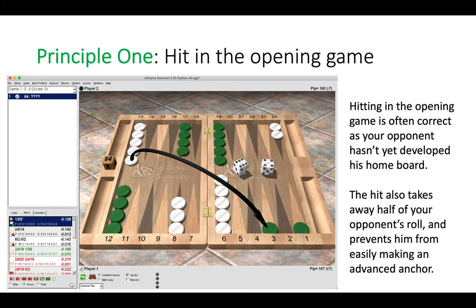The correct move here is to hit 13 to three, and this is the first principle: hit in the opening game. Hitting in the opening game is often correct as your opponent hasn't yet developed his home board, and therefore if you get hit back you will not have any trouble re-entering. The hit also takes away half of your opponent's roll, so it's more difficult for him to build and create structure on the other side of the board.